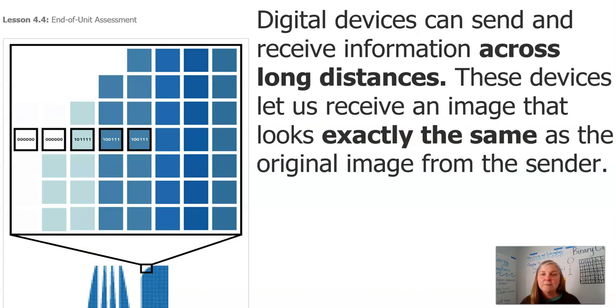Digital devices can send and receive information across long distances. These devices let us receive an image that looks exactly the same as the original image from the sender. Now think about that. This whole world of digital devices, communicating across them, binary code. If I take a picture of anything, like my tomato plant maybe, and I send it to my mom, I want that picture to be exactly like the one I think it's going to be. I want it to look like that tomato plant that I took a picture of.